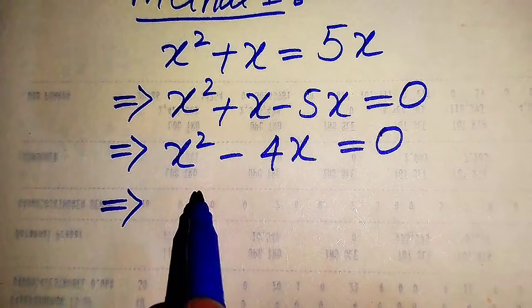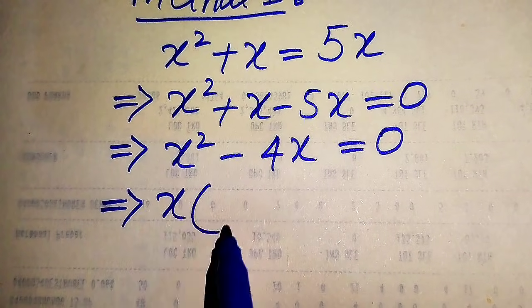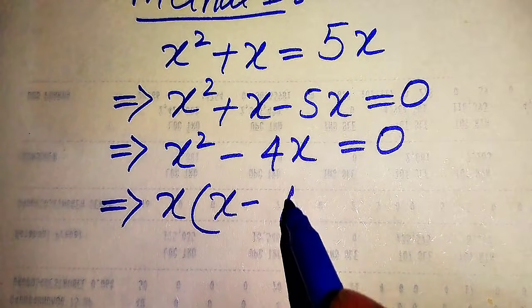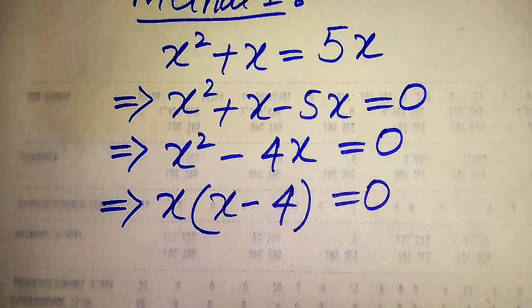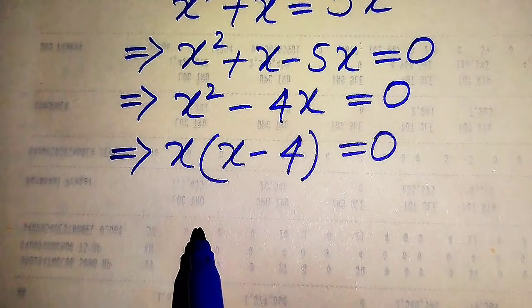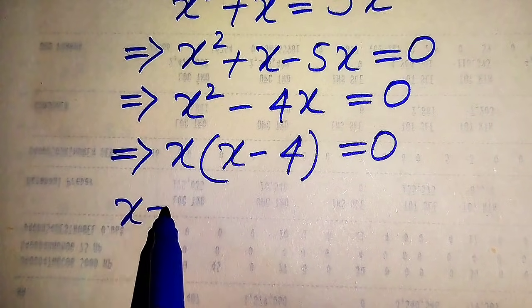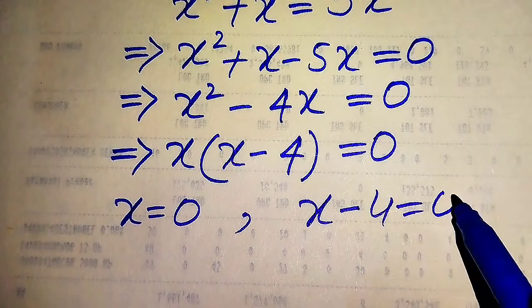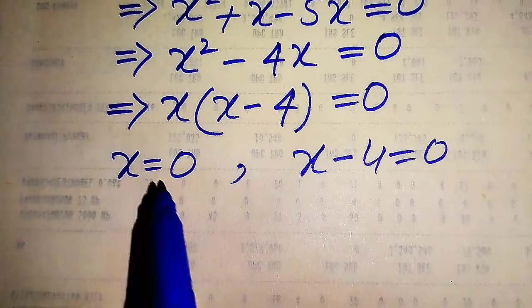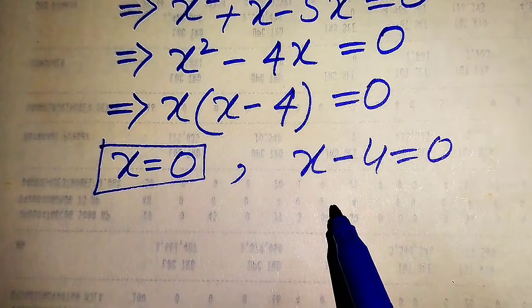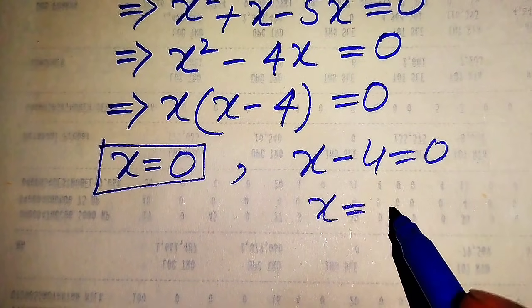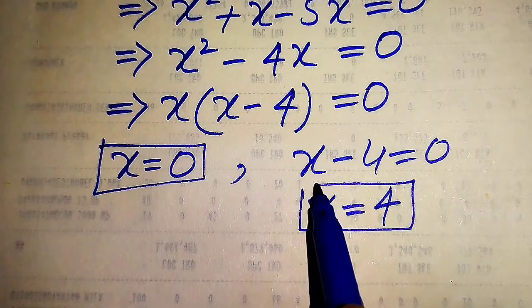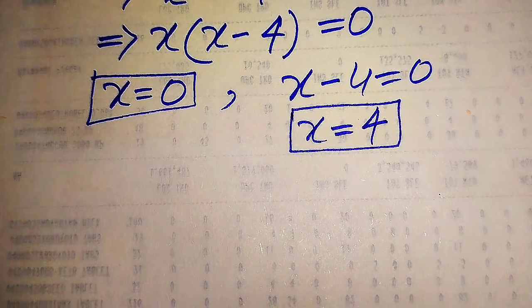Both terms involve x, so we take x as a common factor, giving x times (x minus 4) equals 0. We split this into two cases: the first case gives x equals 0, and the second case gives x minus 4 equals 0, so x equals 4. These are the two roots of the given equation.